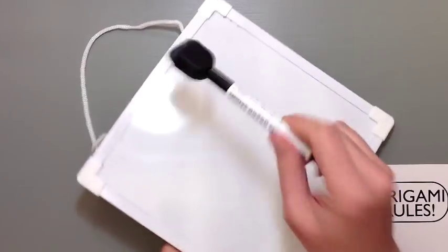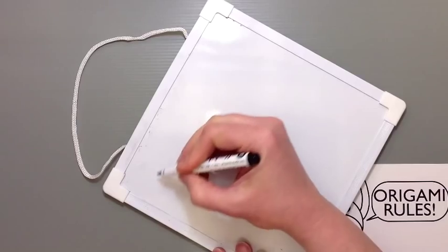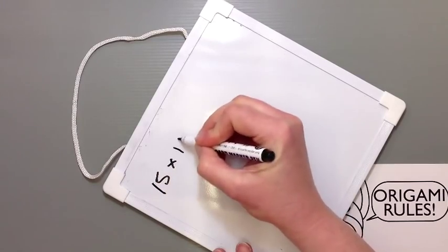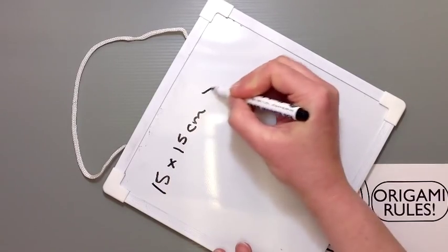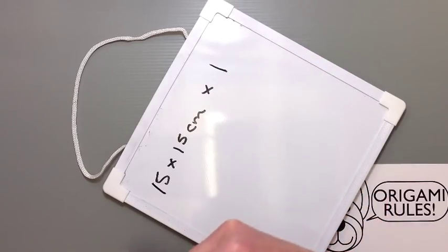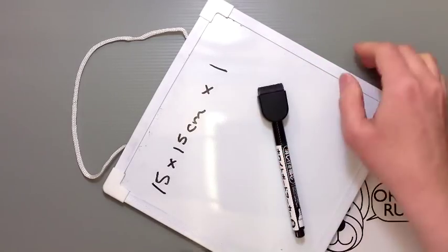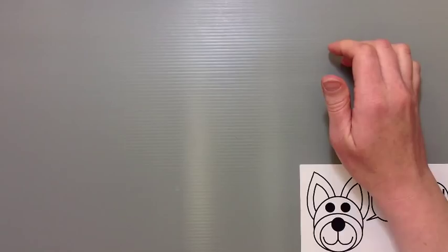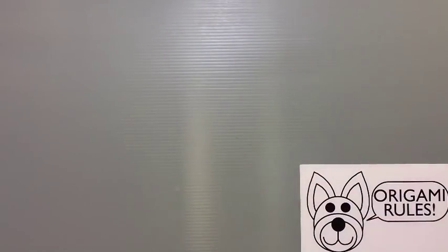But for this particular origami, you're just going to be using standard pieces of square paper. I'm going to be using paper that's 15 by 15 centimeters. I'll let you guys know how big it is when it's finished. You could certainly make it bigger if you wanted to, but this one is pretty easy for little kids' hands to hold on to and make little chomping noises.